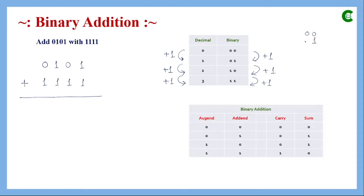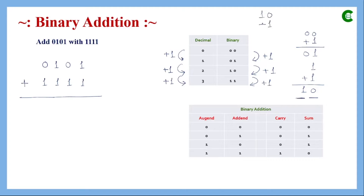From 00 we obtain 01 by adding 1, so 0 plus 1 becomes 1. With 01 adding one more 1 gives 10 — that means when 1 is added with 1 the result is 10. We cannot express this with one bit, so it takes two bits: the lower bit is the sum and the upper bit is the carry. When 10 is added with 1, 0 plus 1 gives 1, and the existing 1 carries forward to give 11.